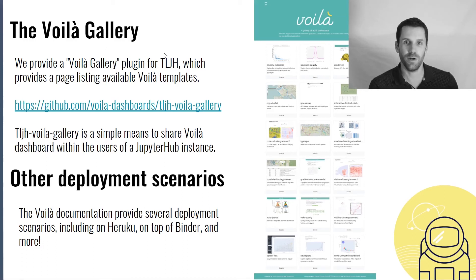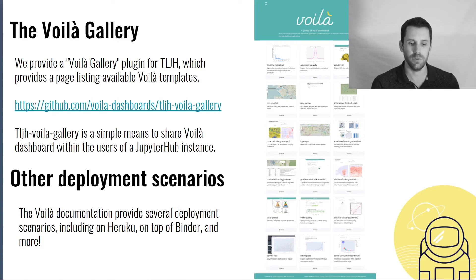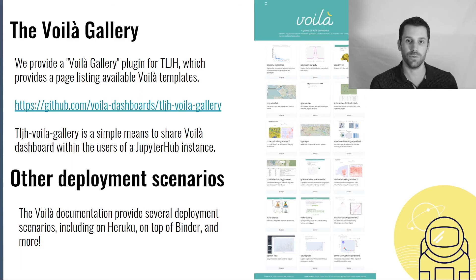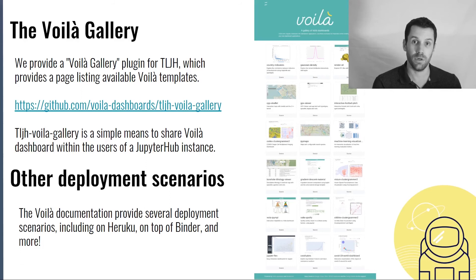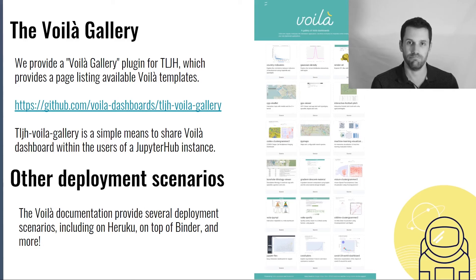Another project built upon Voila that I wanted to feature is the Voila Gallery. Voila Gallery is a plugin for TLJH, the Littlest JupyterHub, which provides a page listing all available Voila dashboards to all Hub users. The source for the project can be found in the Voila Dashboards organization. TLJH Voila Gallery is a simple means to share Voila dashboards within the users of a JupyterHub instance. There are many other deployment scenarios documented in the Voila documentation — for example, you can deploy Voila dashboards on Heroku, on top of Binder, and pretty much anywhere.